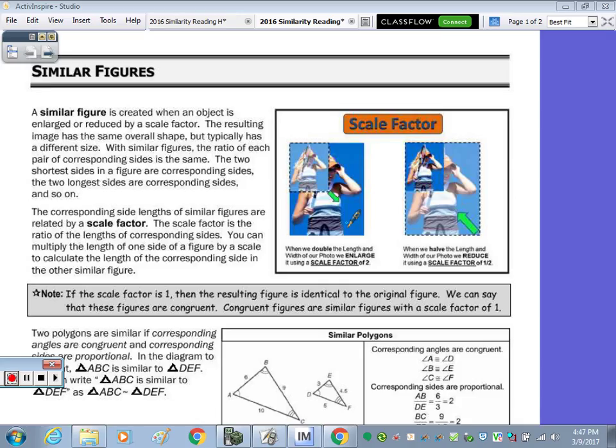Okay, before we take a look at the reading homework, I just wanted to highlight a few things within the reading, and that is the fact that similar figures are figures that have the same overall shape, but not necessarily the same size. And with similar figures, let's underline this statement here, the ratio of each pair of corresponding sides is the same. So that means the two shortest sides in a figure are corresponding sides, the two longest are corresponding sides, and so on.